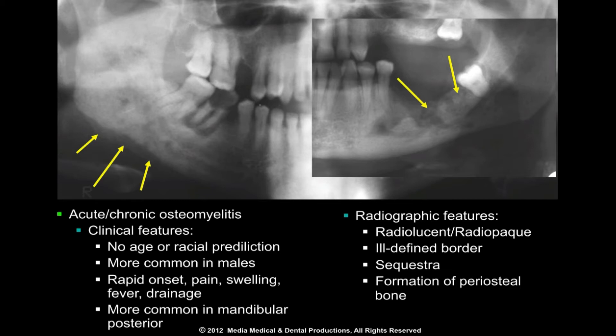Acute osteomyelitis presents most often as radiolucent with an ill-defined border. The internal structure of chronic osteomyelitis may vary from radiolucent to radiopaque and the border may be somewhat better defined. The term diffuse sclerosing osteomyelitis is used to refer to chronic osteomyelitis in which bone formation predominates over bone destruction.